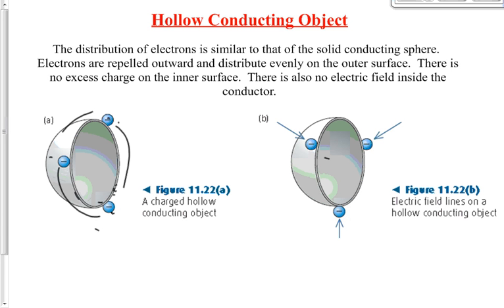A car is a safe place in a lightning storm because it's a hollow metal object. A hollow metal object causes the electrons to go to the outer surface. The electric field points toward each electron on the surface, but if you do a vector analysis, those fields all cancel out. So the net electric field inside the surface is zero — and that's why it's safe. It doesn't matter how many quadrillion electrons are on the surface of the car; the net electric field inside will be zero.